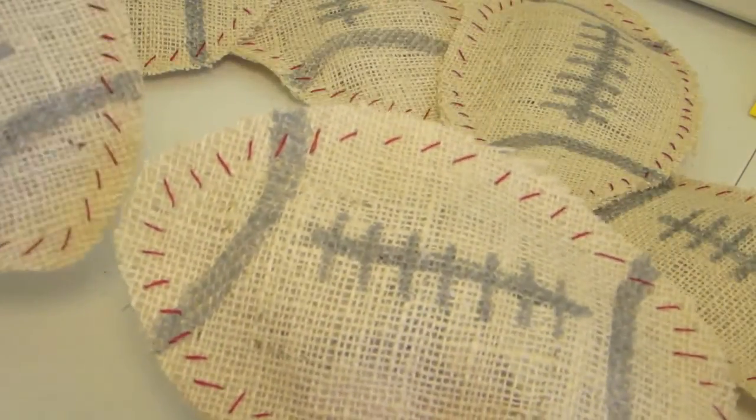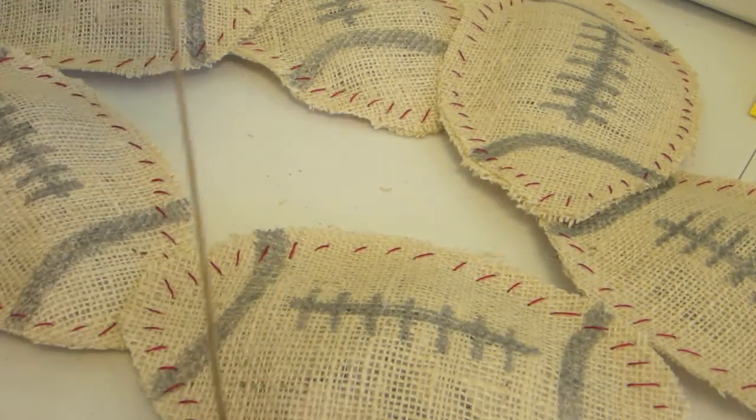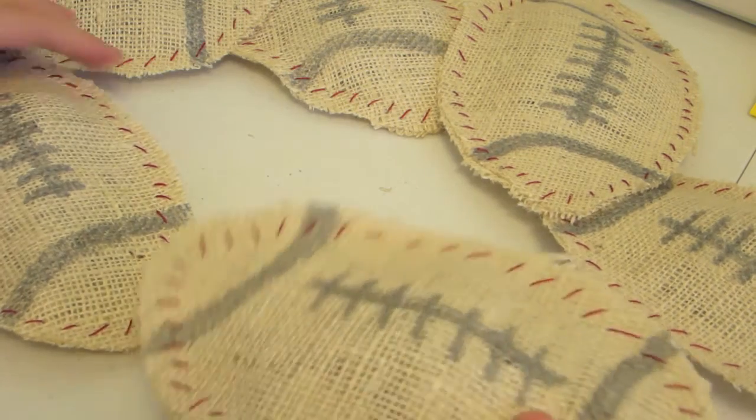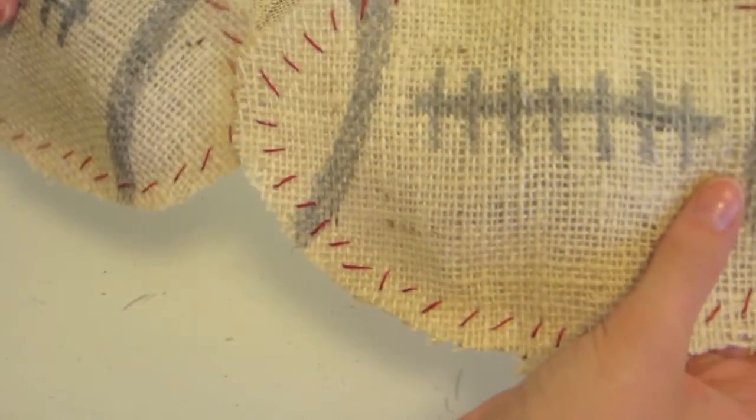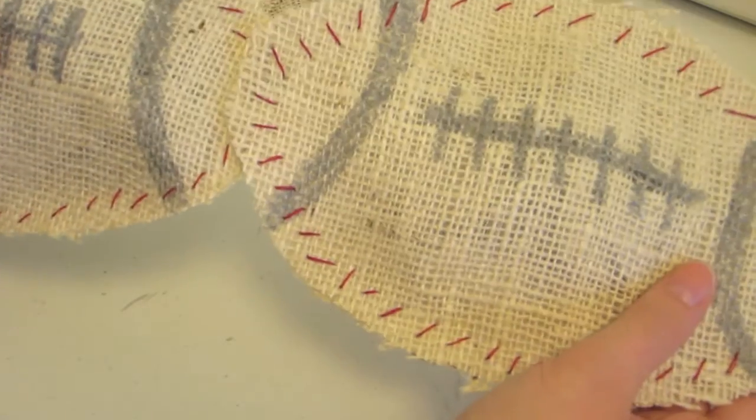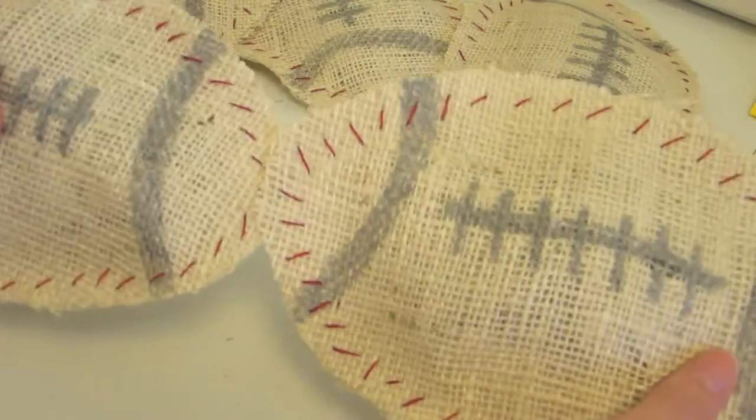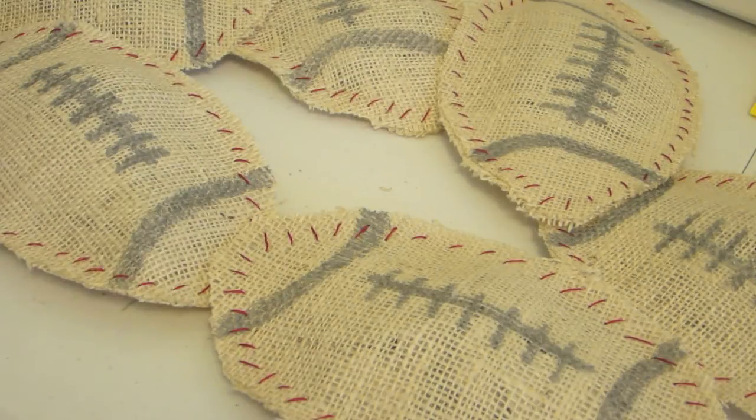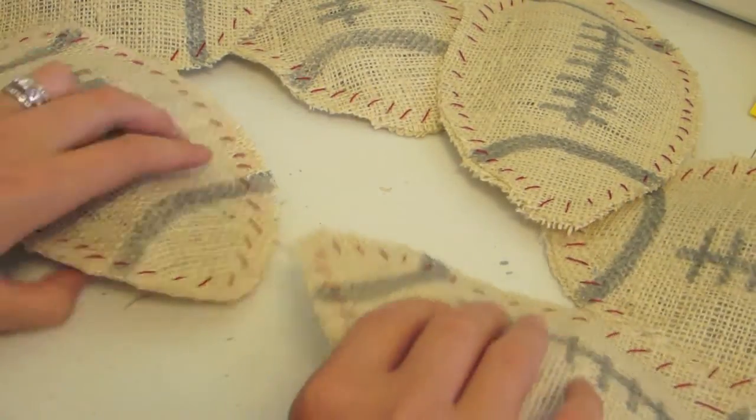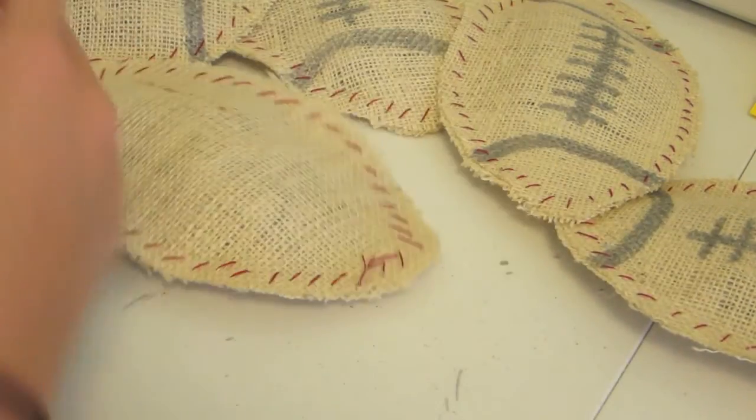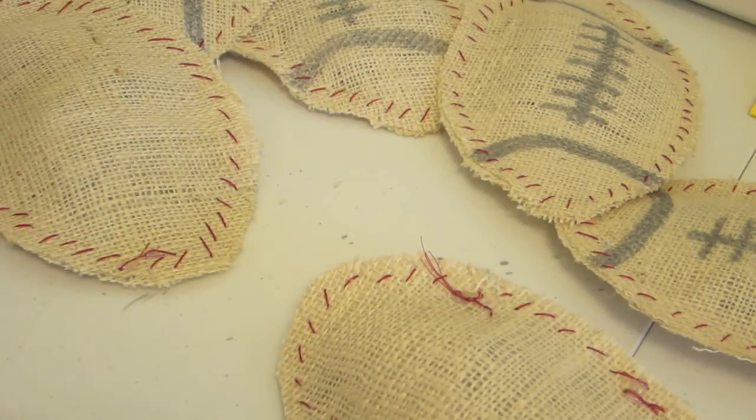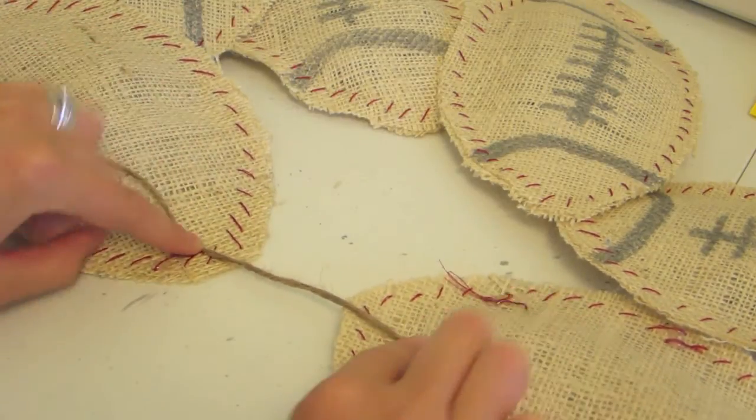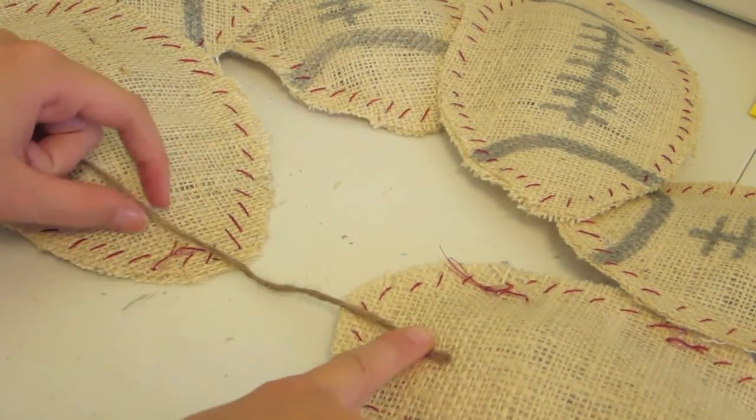Once you're done making all your burlap footballs, we're going to put them together with twine. This will make them more pliable so they can hang nicer on your wall. If you just glued them together, it would be really stiff. I'm going to piece mine together with the twine using my hot glue gun. It's pretty much like what we did with the string. I'll decide the distance I want between each football and glue the two ends of my twine down.